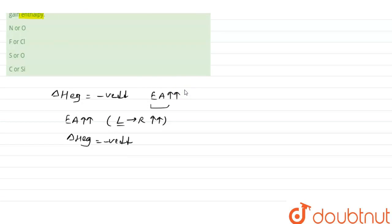The elements given in the question are: carbon and silicon, nitrogen and oxygen, oxygen and sulfur, and fluorine and chlorine.